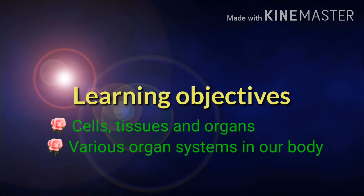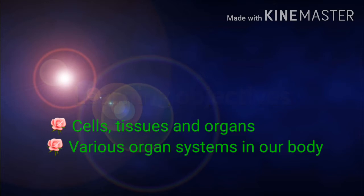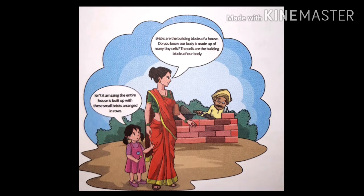These are the learning objectives we are going to learn in this chapter. Children, what can you see in this picture? The small little girl's name is Aditi. Aditi was returning home from school with her mother. On their way, they saw a house being built. Her mother told her that bricks are the building blocks of a house. Do you know our body is made up of many tiny cells? The cells are the building blocks of our body. Aditi replied that it's amazing — the entire house is built up with small bricks arranged in rows.